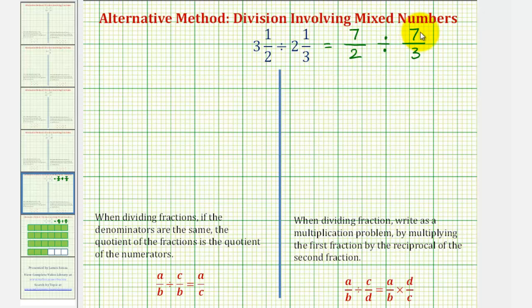Now for the alternative method, we want to start by obtaining a common denominator, which would be the least common multiple of two and three. Since six is the least common multiple of two and three, we want both denominators to be six.